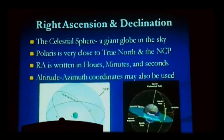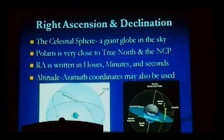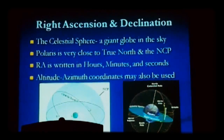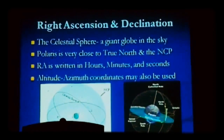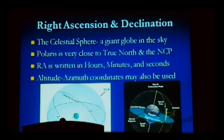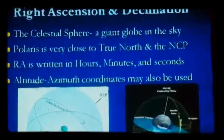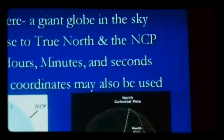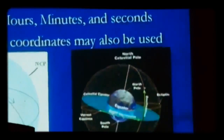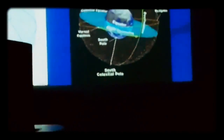Two of the key terms I mentioned are right ascension and declination. These are the two coordinates you can use to find any object in the sky. When you look at a chart listing an object's right ascension and declination — for instance, to locate the Andromeda Galaxy — those coordinates are fixed. They never change. Unlike other types of coordinates, they always remain constant.